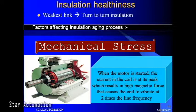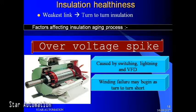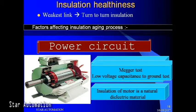When the motor is started, the current in the coil is at its peak, resulting in high magnetic force that causes the coil to vibrate at two times the line frequency. Overvoltage spikes also affect the insulation aging process; they are caused by switching, lightning, and variable frequency drives. Winding failure may begin as turn-to-turn shorting, and voltage unbalance reduces the insulation life of a running motor.